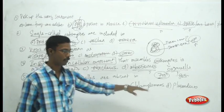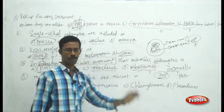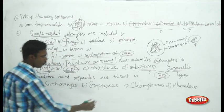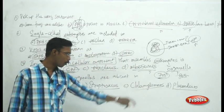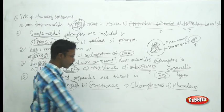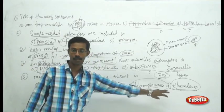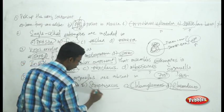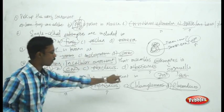The next question: membrane-bound organelles are absent in — Saccharomyces, Streptococcus, Chlamydomonas, or Plasmodium? Saccharomyces (yeast) belongs to fungi; Chlamydomonas and Plasmodium belong to Protista — all are eukaryotic cells with membrane-bound structures. Streptococcus is a bacterium belonging to Monera and lacks membrane-bound organelles. The answer is Streptococcus.